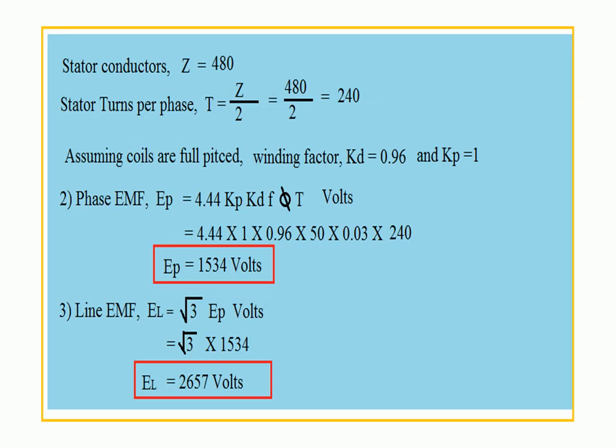Next step: go for phase EMF. Phase EMF = 4.44 × Kp × Kd × F × φ × T — the standard expression with 5 things to remember. Substitute all values: Ep = 1534 volts. Next, calculate line EMF. Synchronous generators are always star connected, hence line EMF = √3 × phase EMF = √3 × 1534 = 2657 volts.